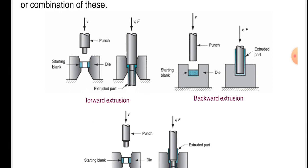Next is backward extrusion. In backward extrusion, the starting blank is given, dies are given, and the punch strikes on the die and workpiece with velocity V and force F. In the next figure, the extruded part is produced.